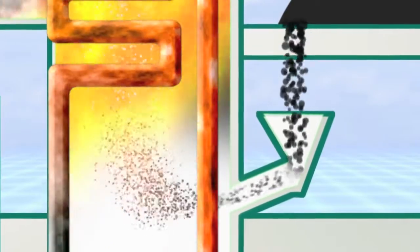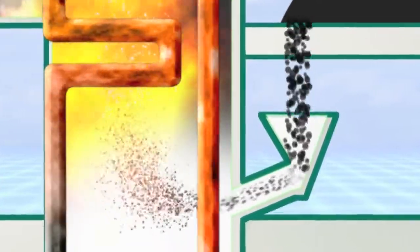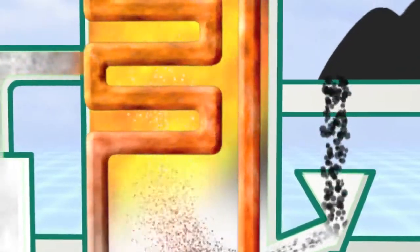Burners ignite the coal and air mixture, creating a maximum amount of heat possible, as much as 1500 degrees centigrade.